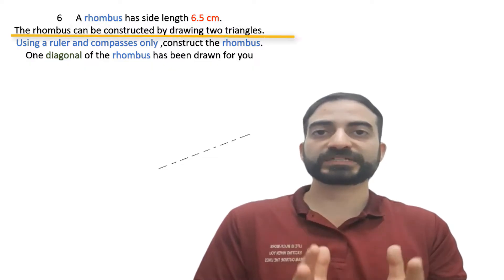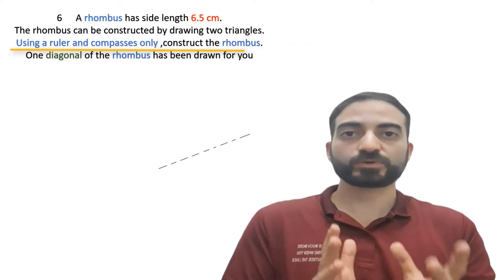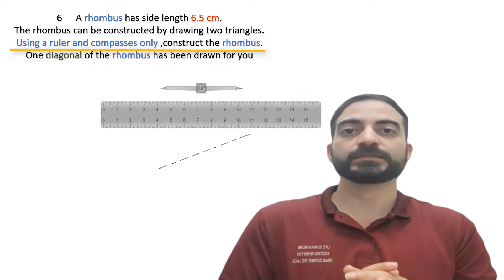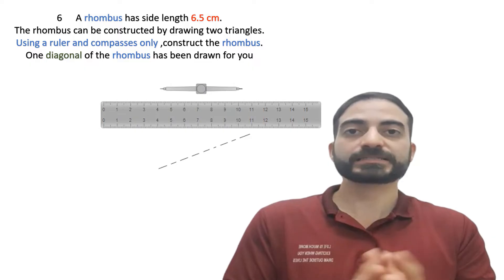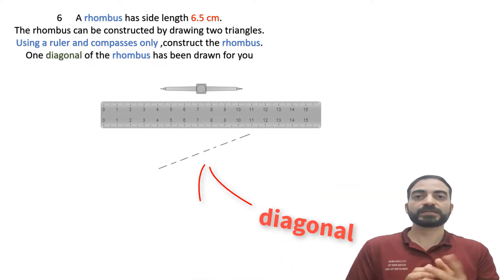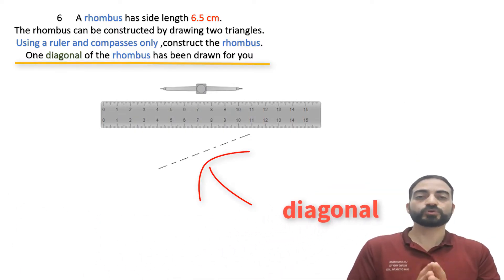The rhombus can be constructed by drawing two triangles using a ruler and compasses only. Construct the rhombus. Leave in your construction arcs, one diagonal of the rhombus has been drawn for you.